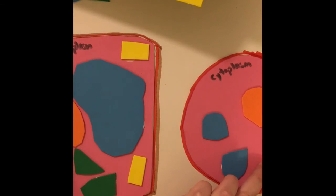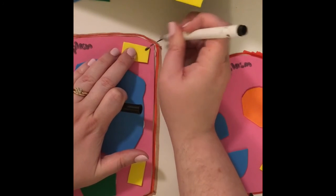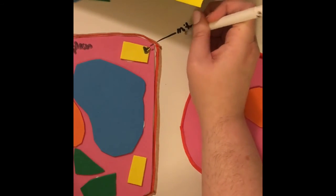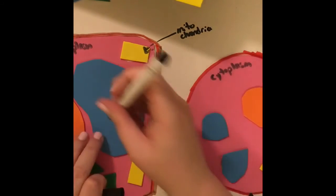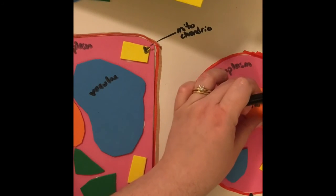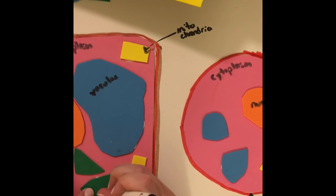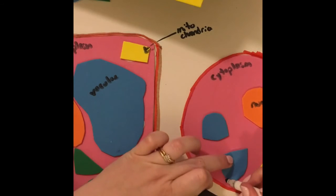You can always kind of draw little weird arrows. If you'd rather make a key, you can always make a key so that we know what we're looking at, or you can write on top of the foam. I'm going to make sure I label everything.